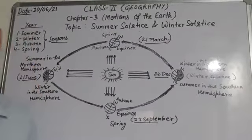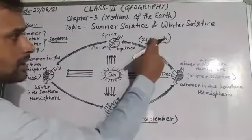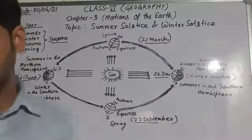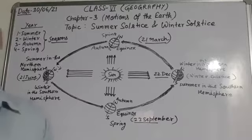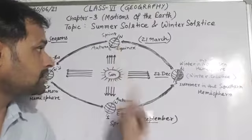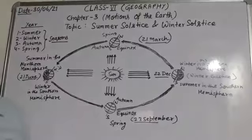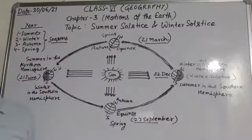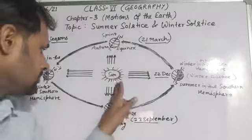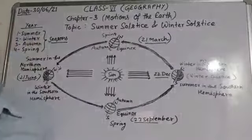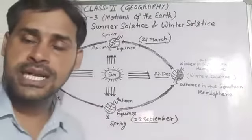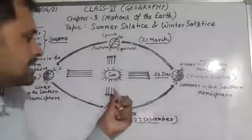On 21st March and on 23rd September, direct Sun rays fall on the equator. The poles are not tilted towards the Sun — neither pole is tilted. The whole Earth experiences equal days and equal nights. This condition is called equinox. When equal days and equal nights occur, that condition is called equinox.